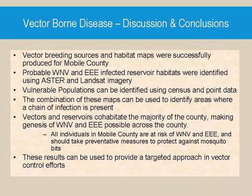By completing the study, detailed vector and reservoir habitat maps were created along with a specific vulnerable population map. The risk map can be used to identify areas of higher risk where the chain of infection is present. In conclusion, vectors and reservoirs inhabit the entire county, therefore all should take preventative measures when going outside during the summer months. However, the risk map did show areas of higher risk, including areas of high urbanization, areas near water, and areas near major roads. This could be used by the Mobile Department of Vector Control to create a more targeted approach in vector management efforts.